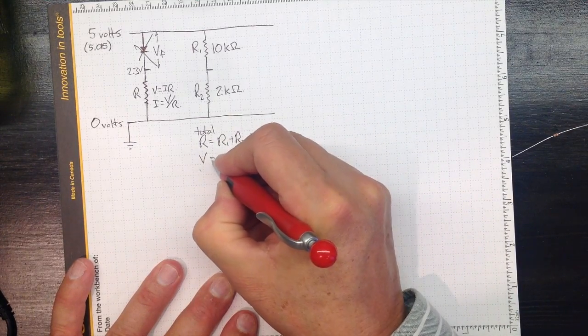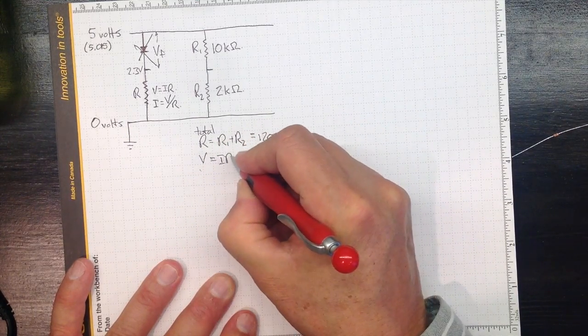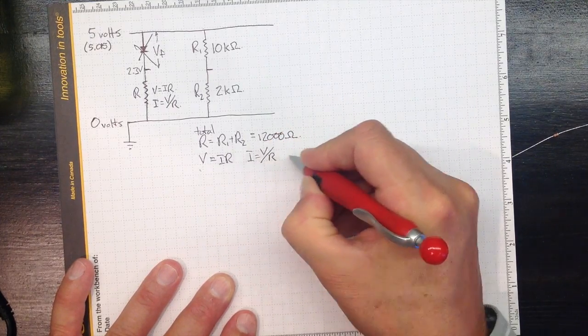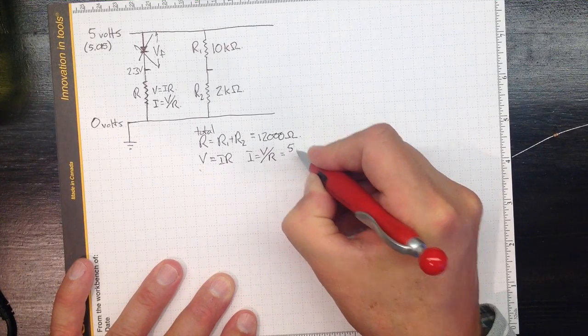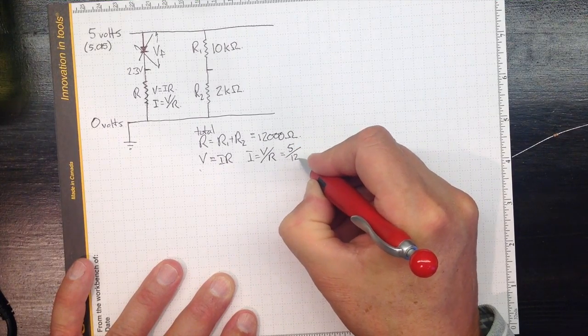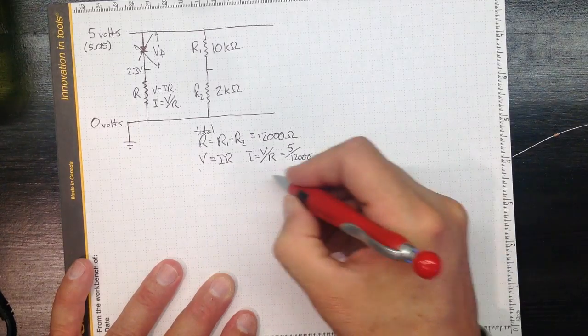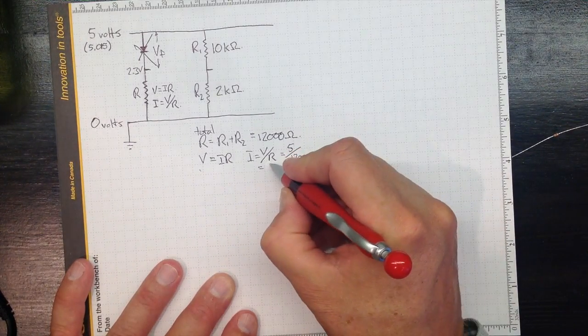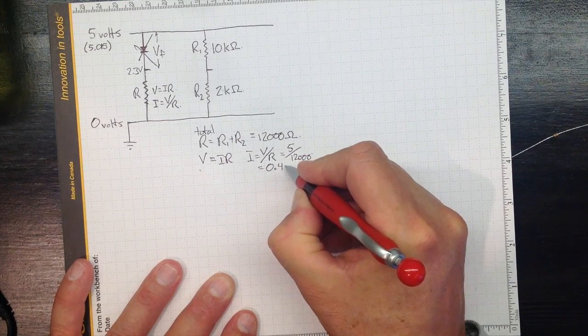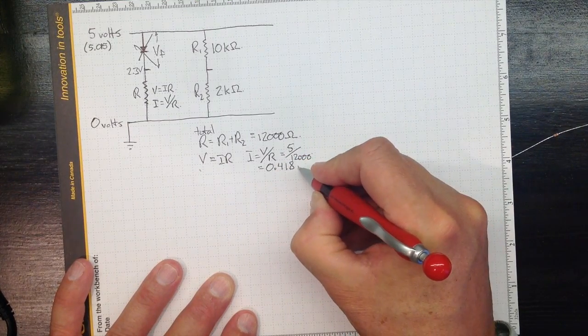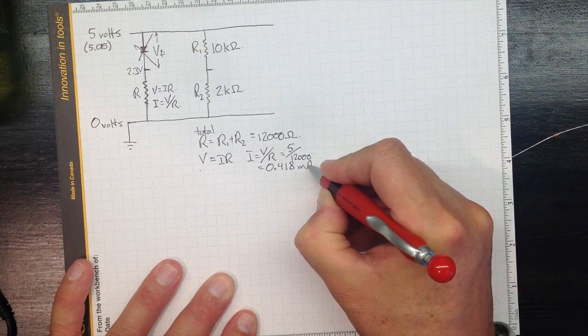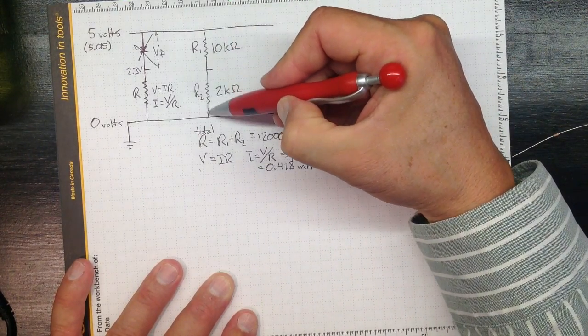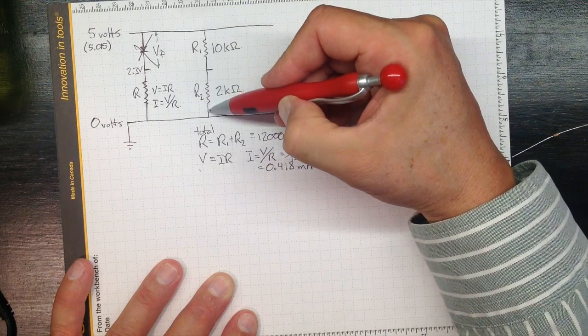V is still equal to IR, or I equals V over R. If we take 5 volts, divide it by 12,000, then we wind up with 0.418 milliamps flowing through this series circuit, two resistances in series.